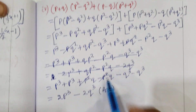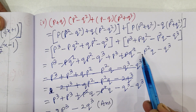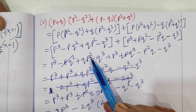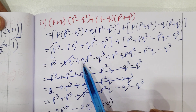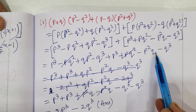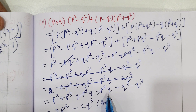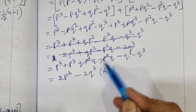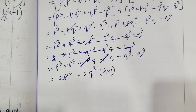आप चाहें तो directly यहाँ पर ही strike out कर दीजिए। Otherwise अगर QP² और P²Q में confusion होता है तो arrange कर लीजिए, फिर उसके बाद strike out कर दीजिए। तो यह इसका final answer है।